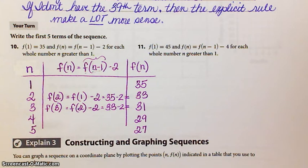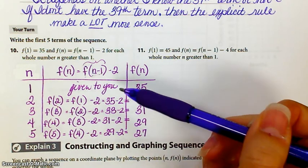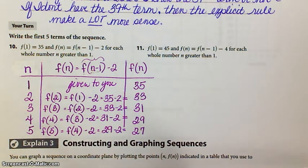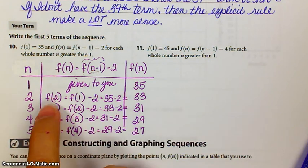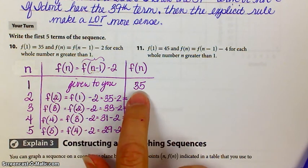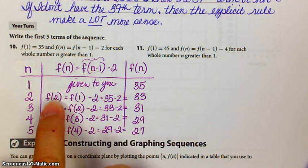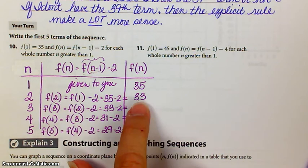Okay, and you just finish out the table in that same format. Okay, so just now that it's completed, remember that the first term in a recursive rule is given to you, and then the subsequent values are dependent on knowing the previous value. So the function value of the second term is the previous term's value, in this case 35, minus 2, so that gives us 33.